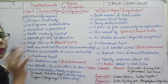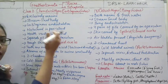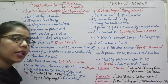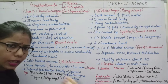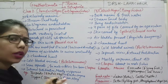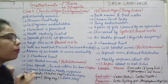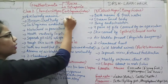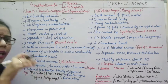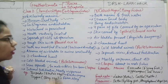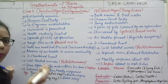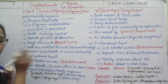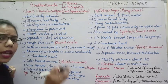Chondrichthyes are exclusively marine — you cannot find these fishes in fresh water. This is a key feature. Their body is streamlined, which helps them swim in water. The endoskeleton is made of cartilage — that's why they are called cartilaginous fishes. As they come under Vertebrata, notochord will be present. The mouth is ventrally located — as in our body also.